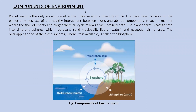Now, the components of environment. Planet Earth is the only known planet in the universe with a diversity of life. Life has been possible on this planet only because of the healthy interactions between biotic and abiotic components, where the flow of energy and biogeochemical cycles follow a defined path. The biogeochemical cycles include the carbon cycle, nitrogen cycle, water cycle, and phosphorus cycle.